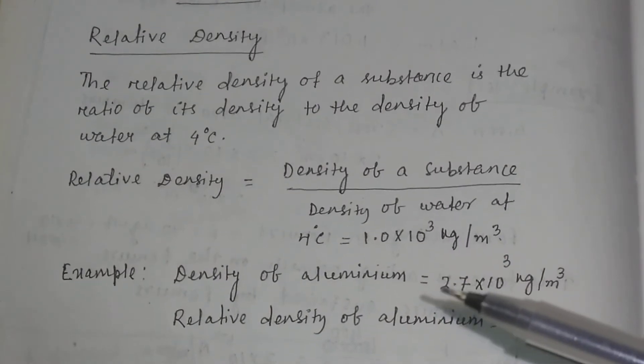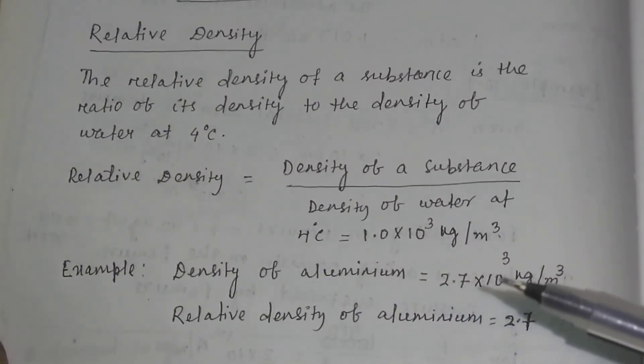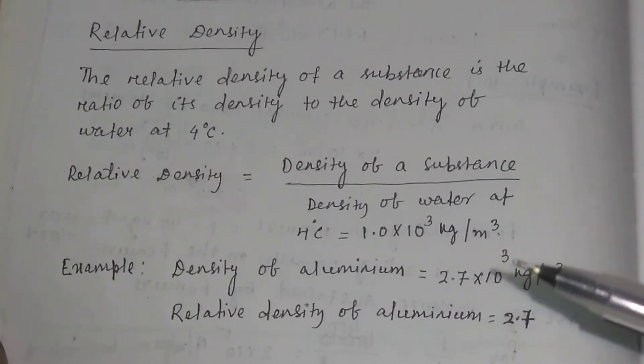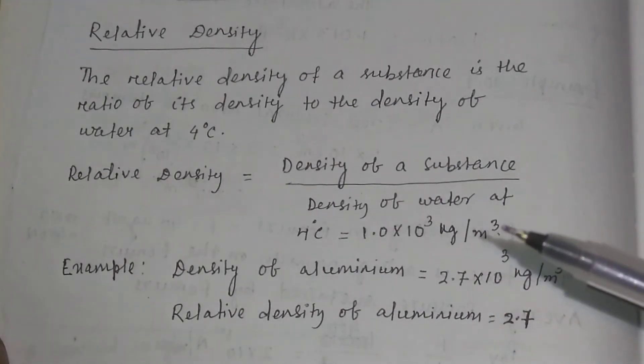So for example, if density of aluminum is 2.7 into 10 to the power 3 kg per meter cube, then its relative density of aluminum will be equal to 2.7. Sometimes it is easier to remember the relative density of various substances instead of its density.